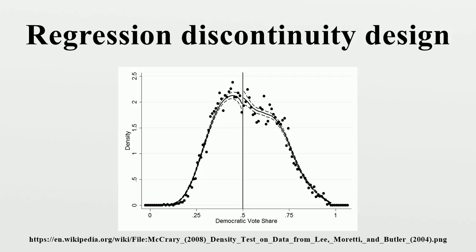When properly implemented and analyzed, the RDD yields an unbiased estimate of the local treatment effect. The RDD can be almost as good as a randomized experiment in measuring a treatment effect. As a quasi-experiment, RDD does not require ex-ante randomization and circumvents ethical issues of random assignment. Well-executed RDD studies can generate treatment effect estimates similar to estimates from randomized studies.